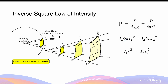We can then cross out 4π on both sides to obtain the final expression provided in the NESA datasheet, which is I₁ times the square of the distance at that point equals the intensity at the second point multiplied by the distance at the second point squared. This expression is always true for the intensity of light or any sort of wave, assuming the power coming from the source of the wave is kept unchanged.